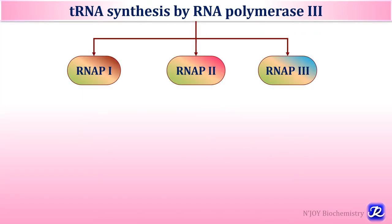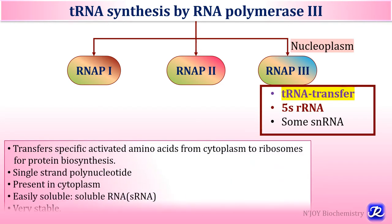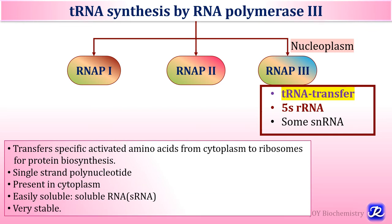tRNA synthesis occurs with the help of RNA polymerase 3 in the nucleoplasm. Transfer RNAs are so called because they transfer specific activated amino acids from the cytoplasm to the ribosome for protein biosynthesis. These tRNAs are single-stranded polynucleotides present in the cytoplasm, easily soluble — which is why they are also called soluble RNA or sRNA — and they are very stable.